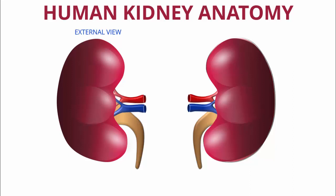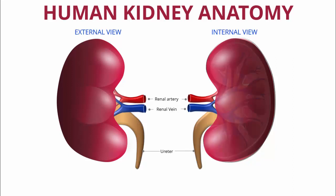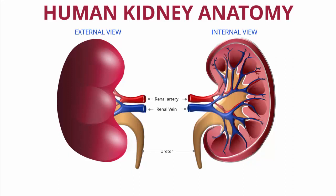Let me show you how it looks. This is the external view of the left and the right kidney. When I click, it gives you the details of each part — you can see the renal artery, then the renal vein, and the ureter. On my next click, it will give the internal view of the kidney.